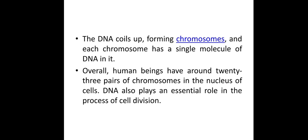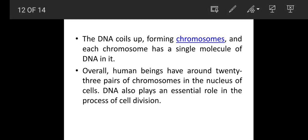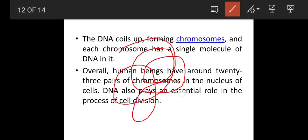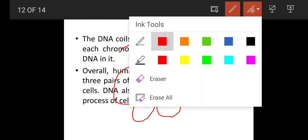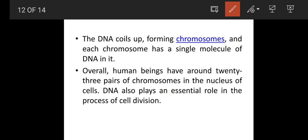The DNA coils form chromosomes, and each chromosome has a single molecule of DNA in it. Overall, human beings have around 23 pairs of chromosomes in the nucleus of each cell. DNA also plays an essential role in the process of cell division.